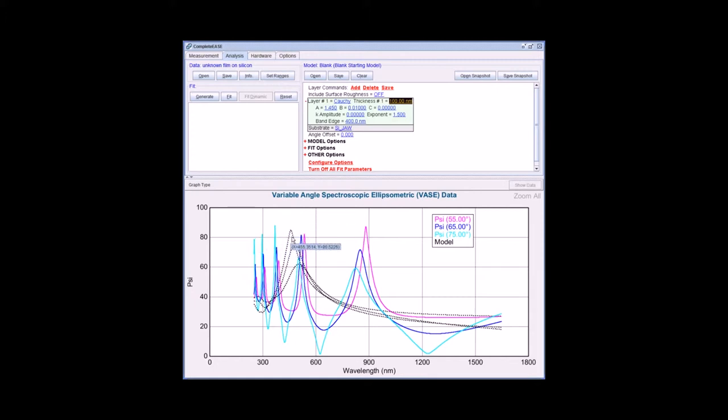The number of oscillations in the data is related to the film thickness. I notice my model generated data has one oscillation, whereas my experimental data has five oscillations. So the starting guess of 100 nanometers is too small. I can hold my mouse over this value, press the shift key, and scroll the mouse wheel up to increase thickness. As I do this you can see the number of oscillations in the model generated curves are increasing. When I get around 560 nanometers, the number of oscillations is a much better match.